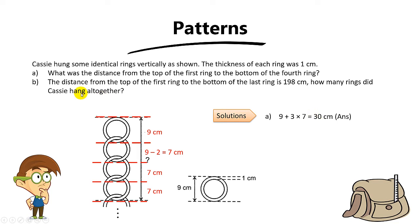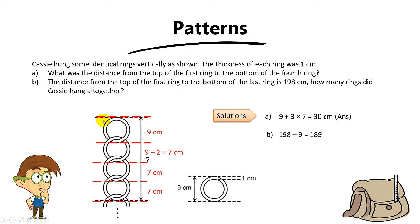Now for part B. The question says that the distance from the top of the first ring to the bottom of the last ring is 198cm — from the first all the way to the last is 198cm. The question asks how many rings did KC hang altogether? The first step is to take 198 minus 9, because 9 is the length of the first ring. You get 189cm.